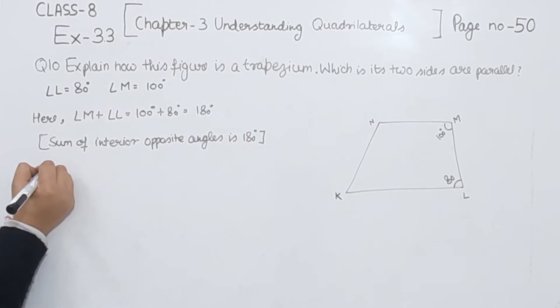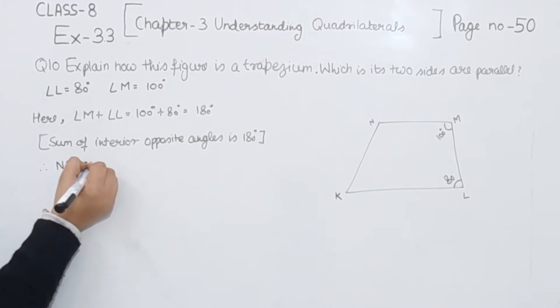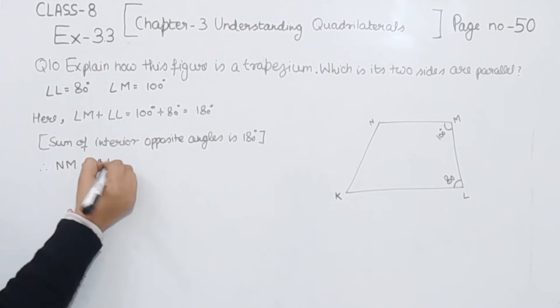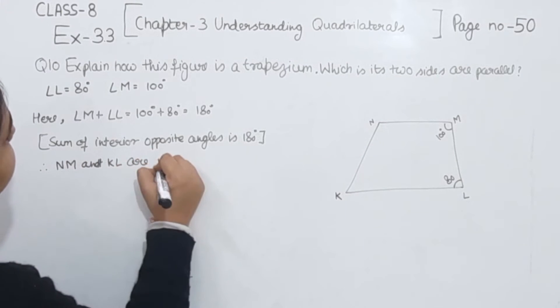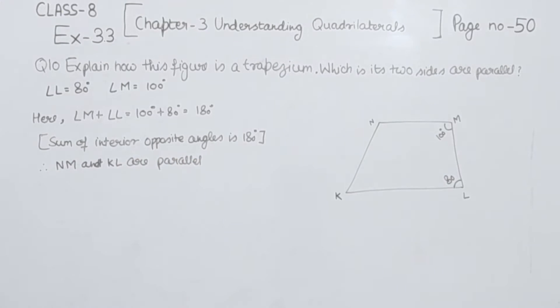So that means they are equal to 180 degrees. So we are going to write here, so NM and KL are parallel. So if they are parallel that means this is a trapezium.